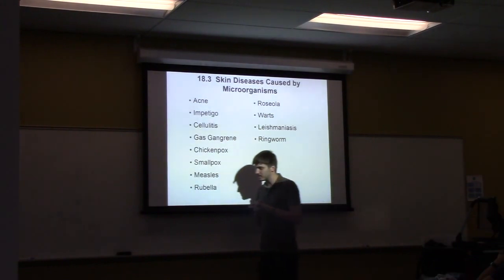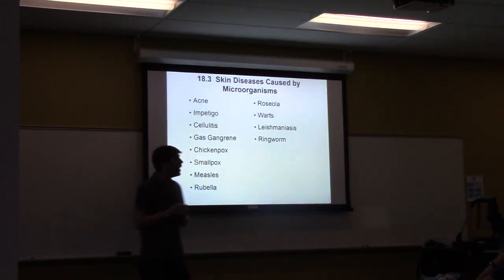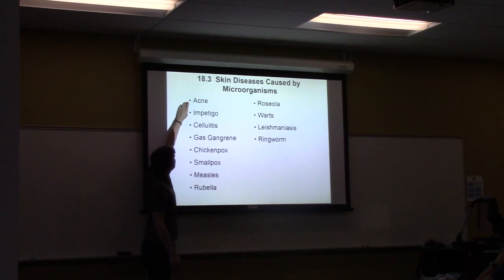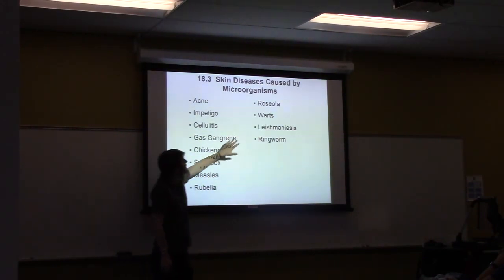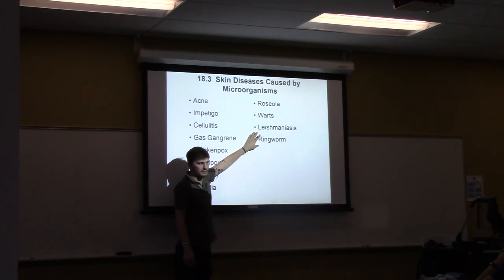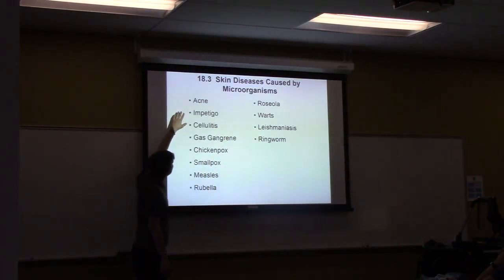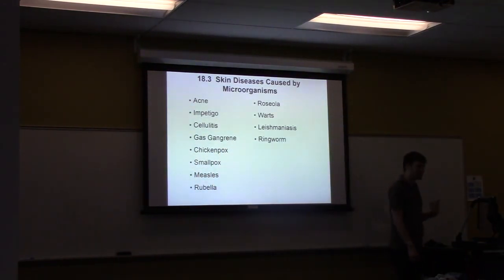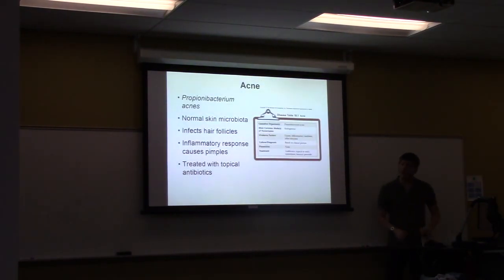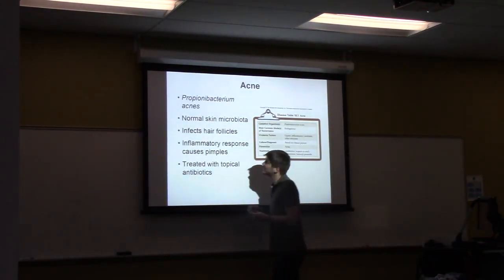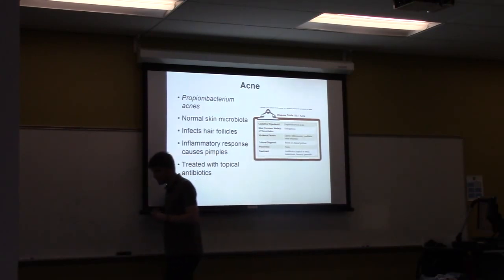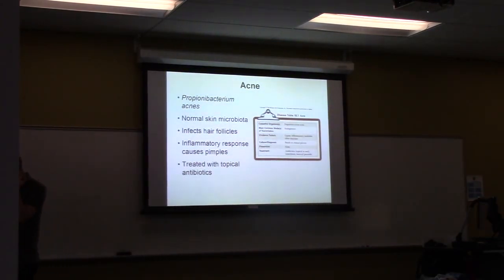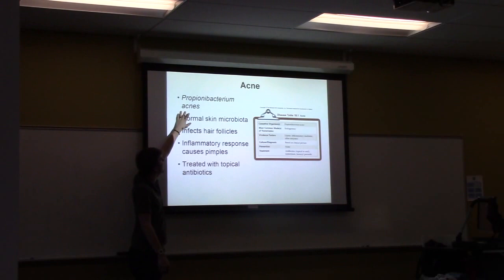Now we'll go through the diseases, broken up as bacterial, followed by viral, then fungal and protozoal infections. Most bacterial infections are caused by one of two organisms: Staphylococcus aureus or Streptococcus pyogenes. The first skin infection we'll talk about is acne — one of the most common skin infections. It's relatively harmless and is caused by a normal skin microbiota: Propionibacterium acnes, found all over the skin especially in hair follicles.